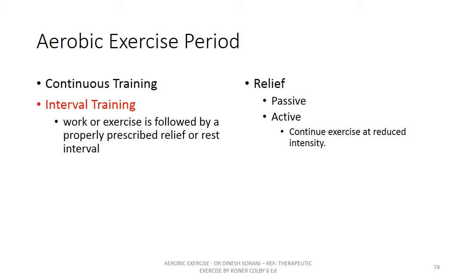In contrast to passive relief, active relief interval training can also be utilized. In active relief, the person performs a low intensity aerobic exercise in the relief time. For example, the person does jogging at moderate speed in the exercise time, and in the relief time the person performs slow walking — five minutes jogging, one minute slow walking, again five minutes jogging, one minute slow walking. Research has found that active relief interval training is better than passive relief interval training.